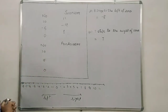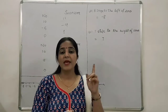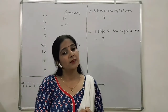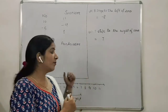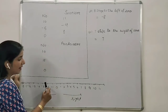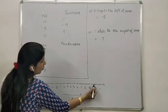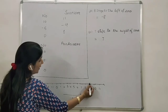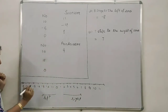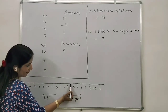Now let us move towards the predecessor. Predecessor is also very important. What we have learned about predecessor is that from the given number, if we subtract 1 — like 3 is the number, subtract 1, we get 2, and 2 is the predecessor of 3. On the number line, if we move one step towards the left, we get the predecessor. Predecessors are always towards the left. So for 10, one step left is 9, so 9 is the predecessor of 10. Predecessor of 5 is 4, because moving one step left gives us 4.